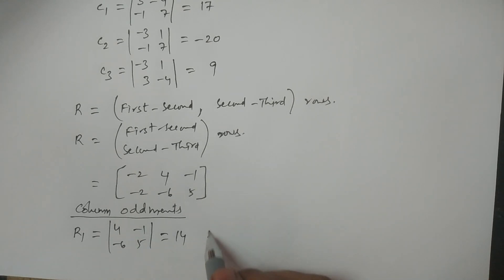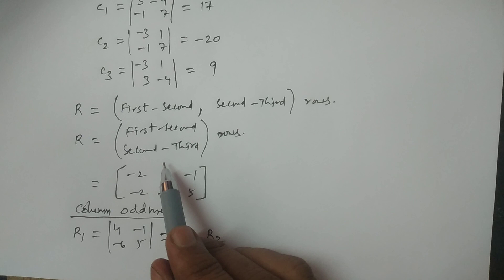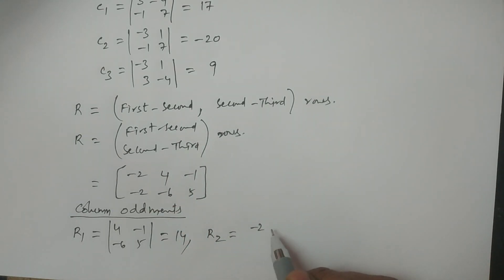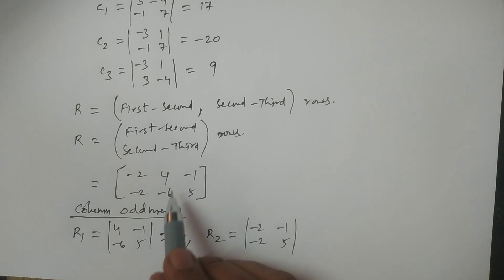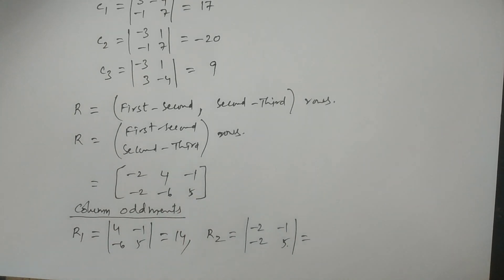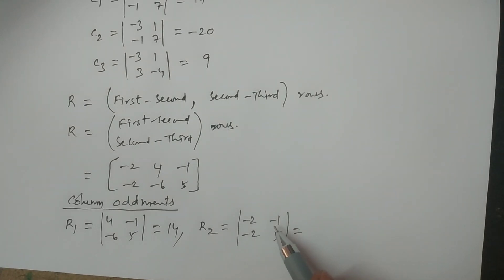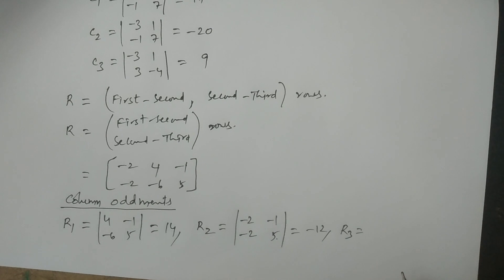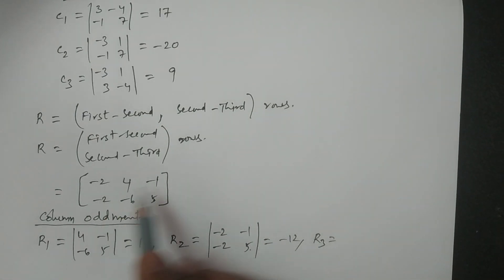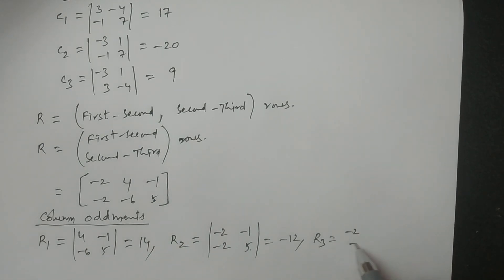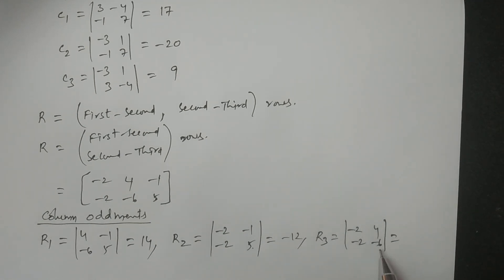That is 20 minus 6 equals 14. For r2, delete the second column — values are minus two, minus two, minus one, five — determinant gives minus 12. For r3, delete the third column — values are minus two, minus two, four, minus six — determinant: minus one minus two minus four is minus five; minus eight plus eight gives 20.